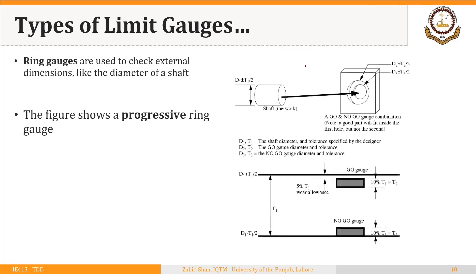Ring gauges are used to check external dimensions like the diameter of a shaft. Just like a plug gauge, the ring gauge has two parts: one to check conformance to the lower limit and the other to check conformance to the upper limit. We will discuss this point in much more detail as we move on in this lecture.